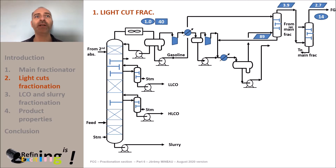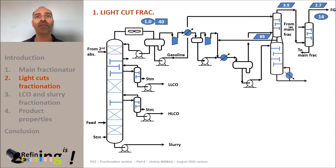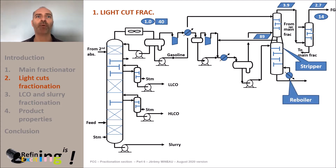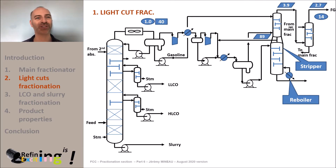This stripper is typically equipped with 30 to 40 trays. In this stripper column we vaporize the lightest molecules of this stream with a reboiler. The heat transferred from the reboiler to the column will dictate the residual amount of H2S in the bottom stream as well as C1 plus C2 molecules.